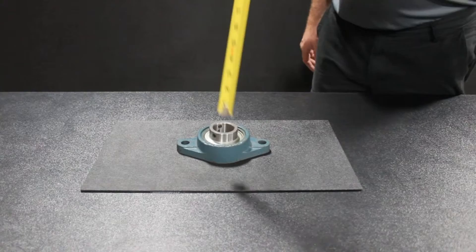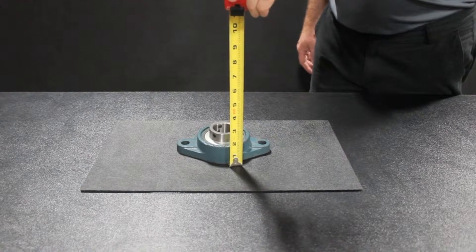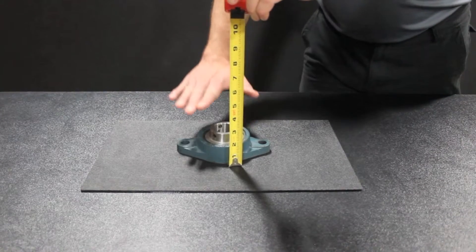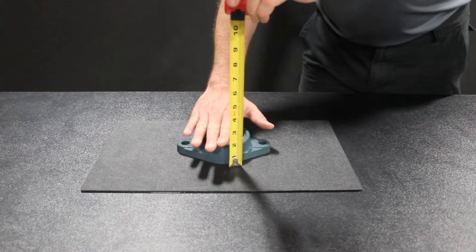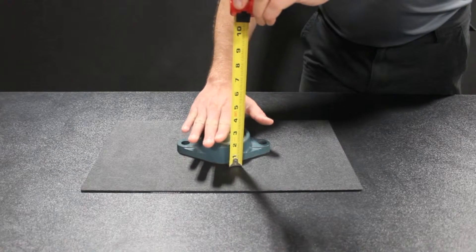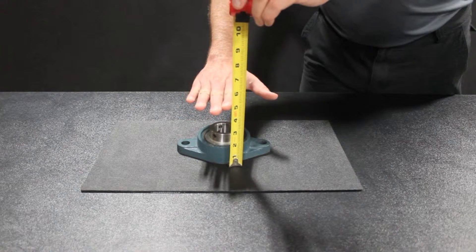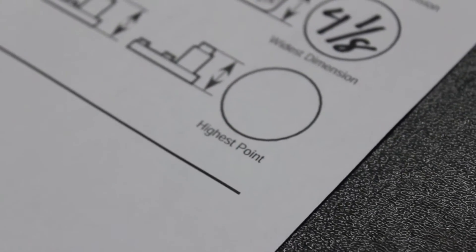Finally, the highest point of the bearing. This is measured when viewing your part from the side. You will need to measure from the base of the bearing to its highest point. Make sure to take note of any extended shaft length and include this in your measurement.